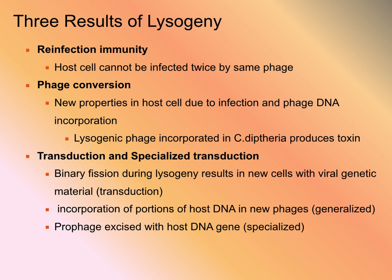Transduction occurs in one of two ways: specialized transduction (which requires the lysogenic cycle) and generalized transduction (which occurs during the lytic cycle). Binary fission during lysogeny causes many new cells to contain viral genetic material. When a prophage excises itself out of a bacterial genome, it sometimes makes an excision error — it takes a little bit of the host DNA and incorporates it into the prophage DNA that's been excised. This extends the prophage DNA with host DNA, and if that host DNA contains a usable gene, we have transmission of genetic material.